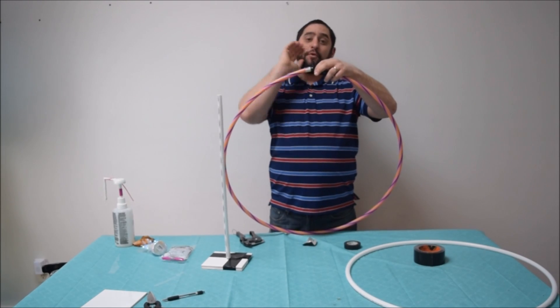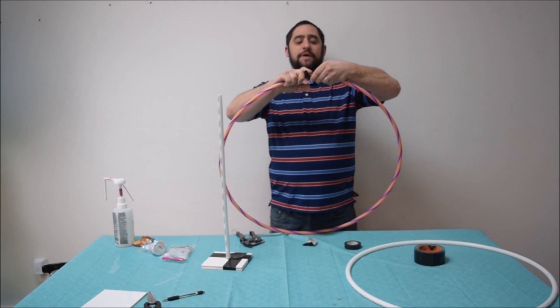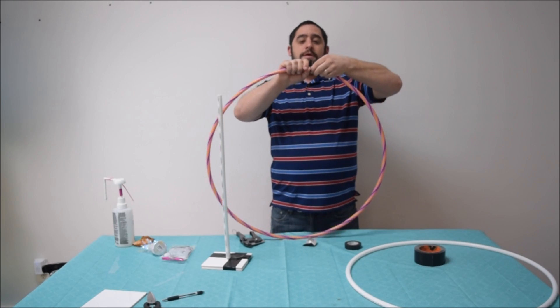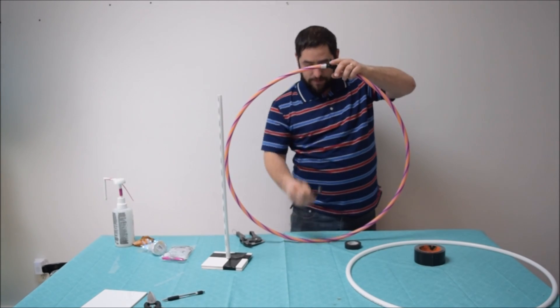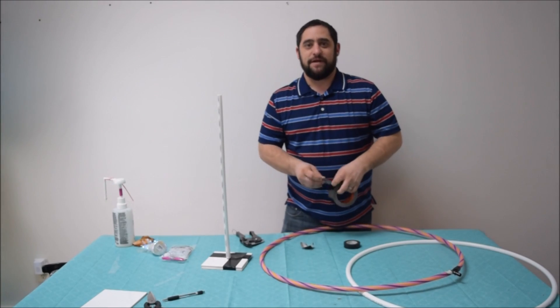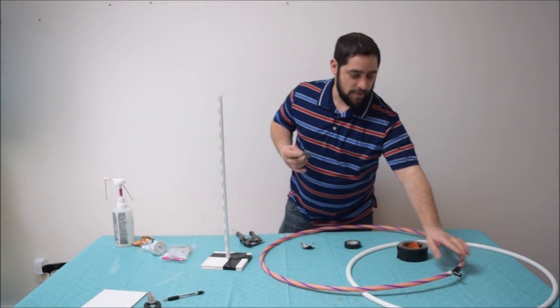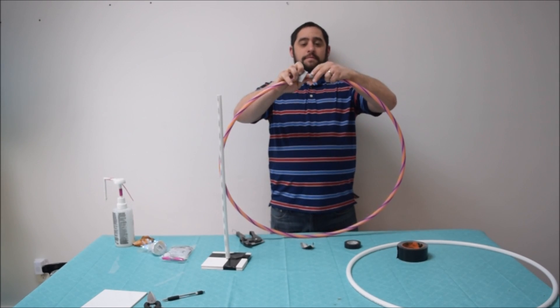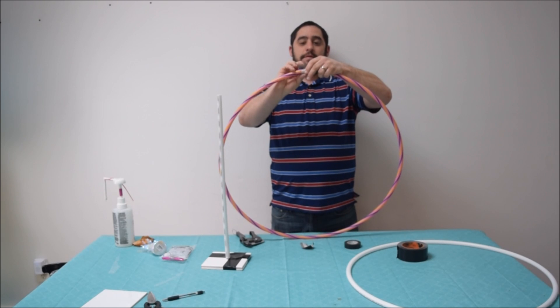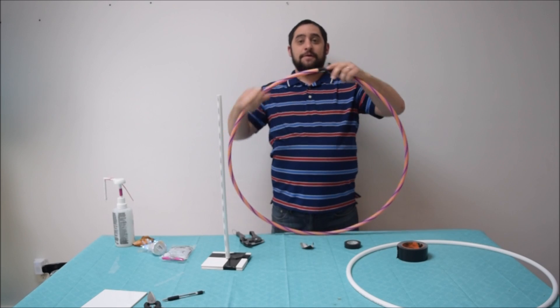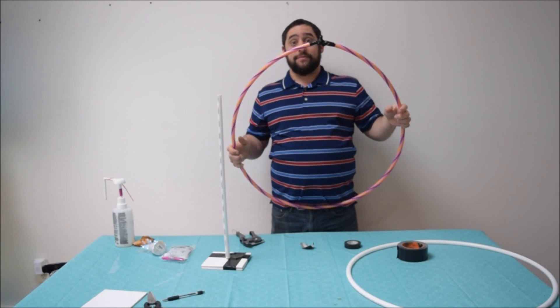Once it's taped, we're gonna go ahead and assemble it. The way we do that is just take this hula hoop and slide it on your PEX pipe like so. And then we would just go ahead and use some more tape here.